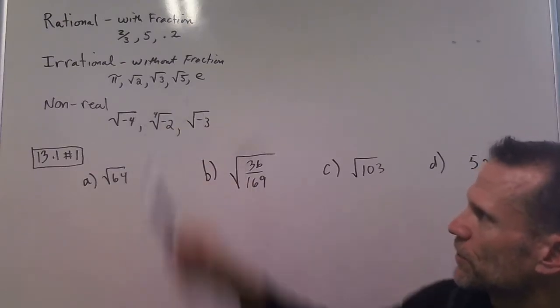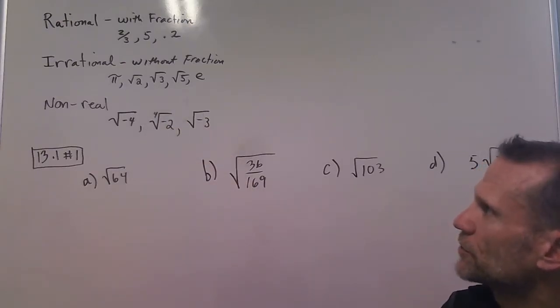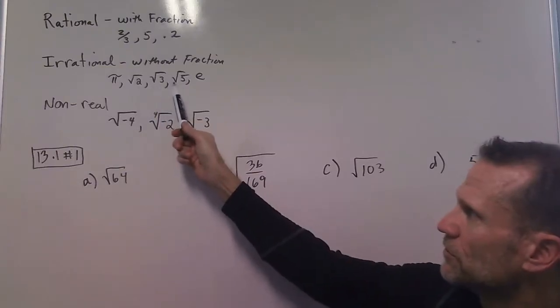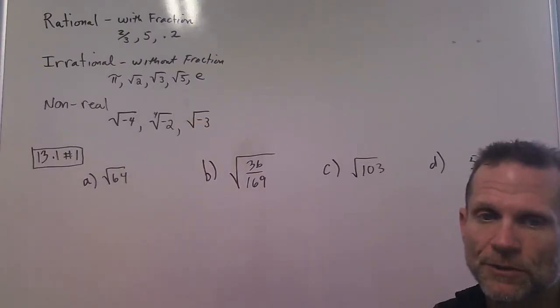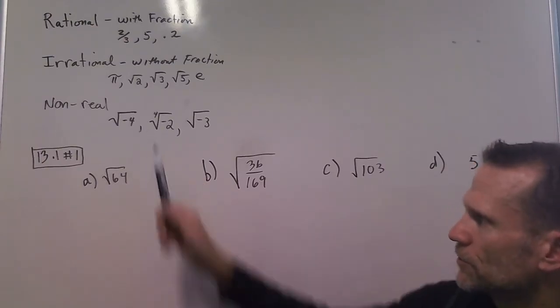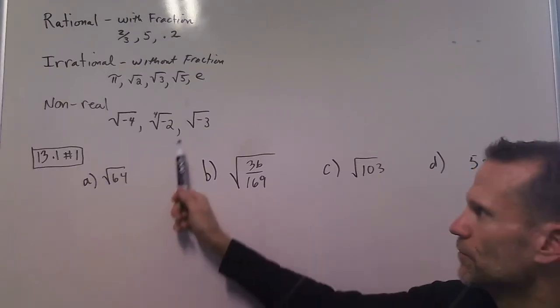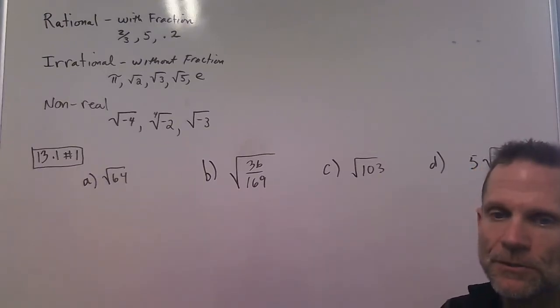Then we have this other field of numbers called irrational, and they're without a fraction, so you can't write those numbers as a fraction with an integer over an integer. Then we have some non-real numbers, which we're talking about more in this course, but some examples are the square roots or the even roots of negative numbers.